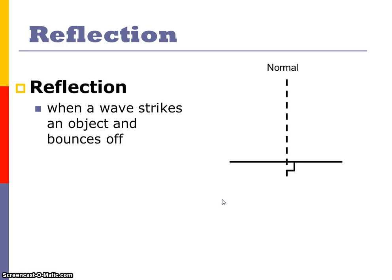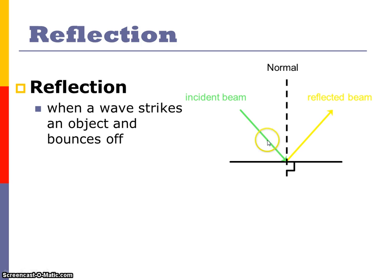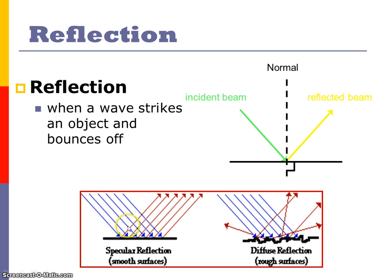We can talk about how light waves act when they come into contact with certain objects. Reflection is when a light wave strikes an object and bounces off. On a smooth surface, this is called regular reflection. On a rough surface, it's called diffuse reflection — the light waves go off in multiple directions, so you don't get those perfect clean rays coming back off.